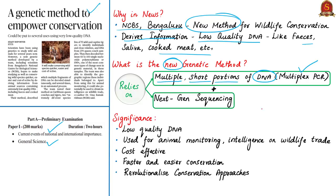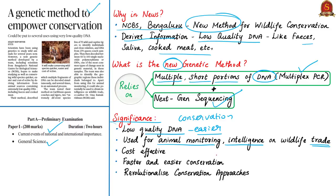The new method also uses next-generation sequencing, in which multiple fragments of DNA can be decoded simultaneously. This method holds significance in conservation efforts: it can use low quality DNA from easier sources, it can be used for animal monitoring and gathering intelligence on wildlife trade, it is cost-effective, and it takes just five days while older methods take at least a month. Thus, it becomes an easier and faster conservation method that revolutionizes conservation efforts.